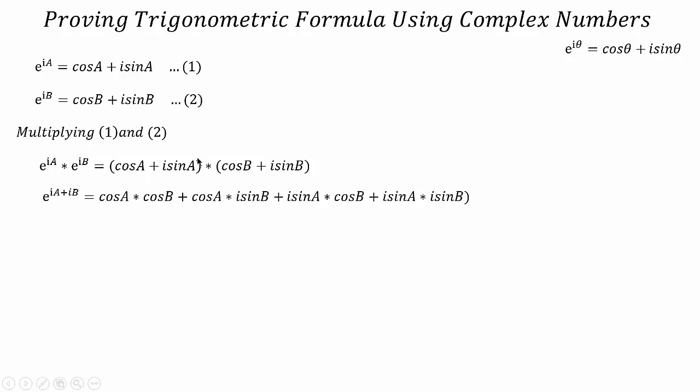Then we open the brackets by multiplying each term with each term of the other. So we will get cos(A)cos(B) + cos(A)·i·sin(B) + i·sin(A)·cos(B) + i·sin(A)·i·sin(B).